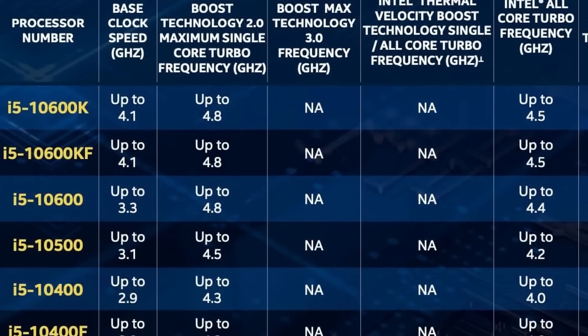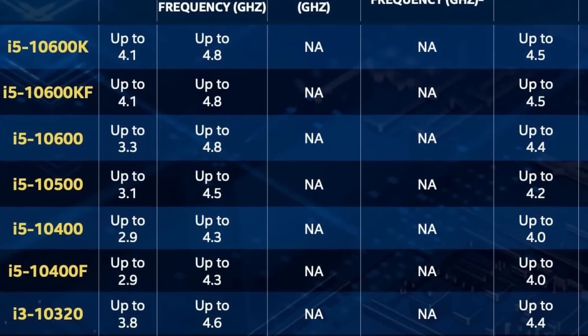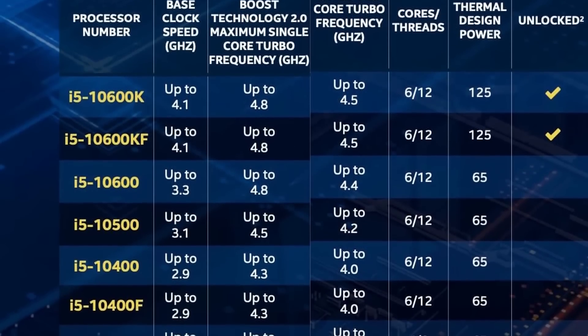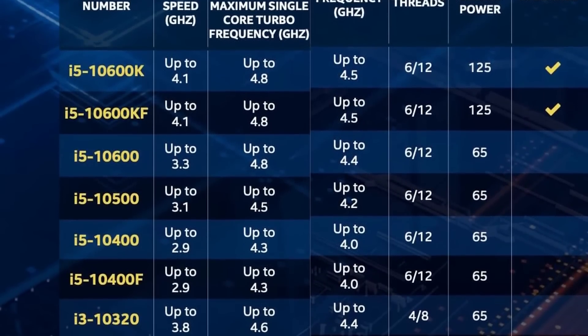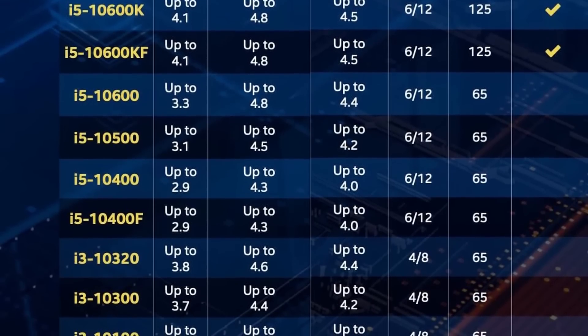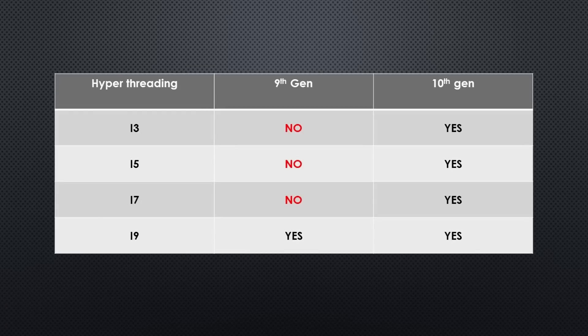Looking at the lower end of the lineup, there are i5, i3, KF, and F series options. For the i3, hyper-threading is now included. For the i5, hyper-threading is also supported. In fact, across the full 10th Gen range, Intel has brought hyper-threading to all tiers — from i3 through i5, i7, and i9.